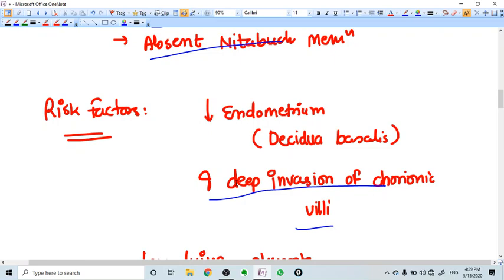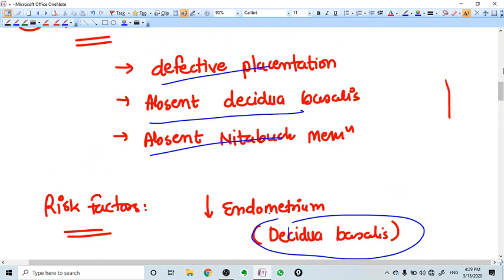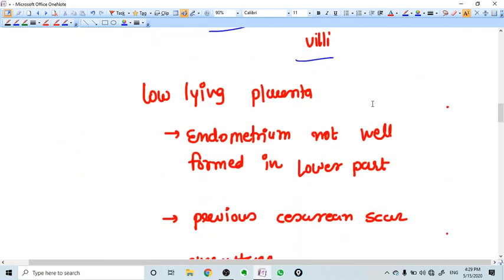Particularly into the decidua basalis we have membranes like Nitabuch's membrane present, from which the placenta is separated. So whenever this endometrium or decidua basalis thickness is decreased or it is weak, then the placental villi will go and grow into the myometrium, and this will result in morbidly adherent placenta.